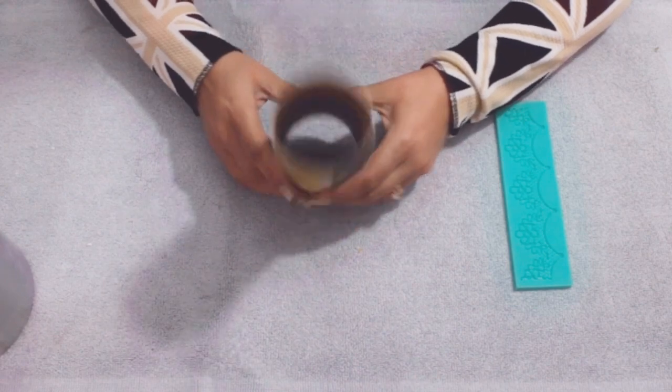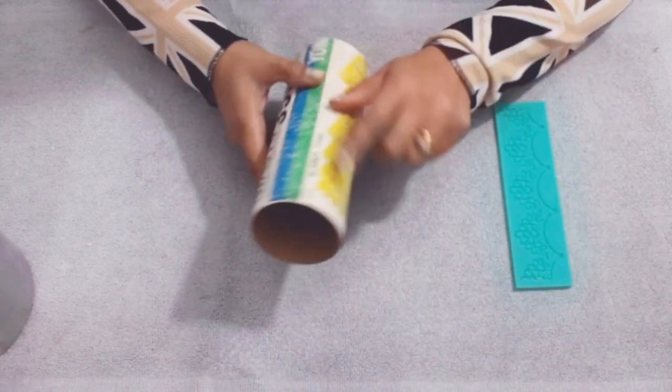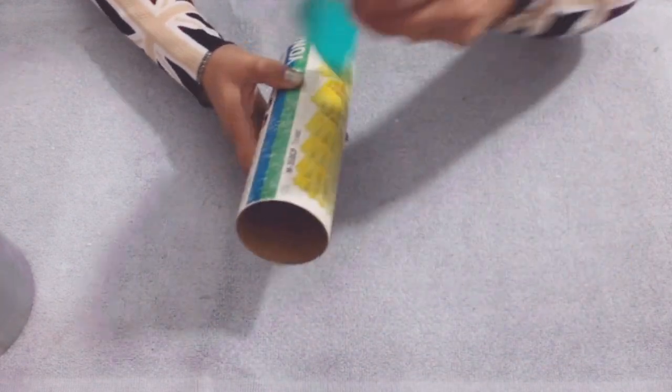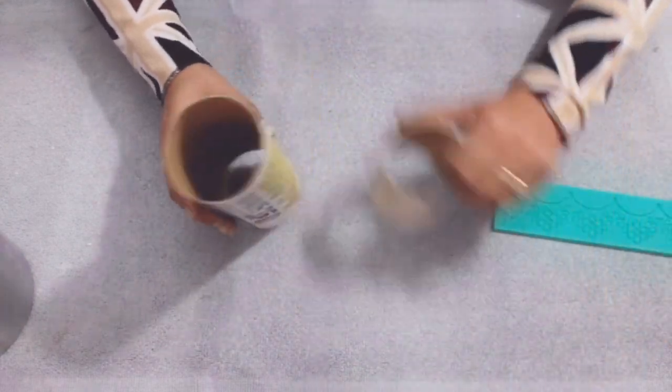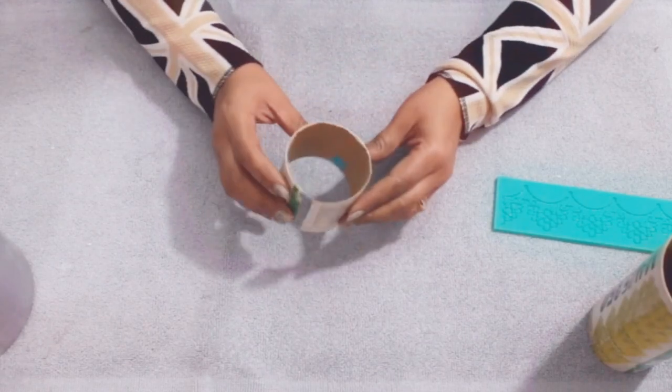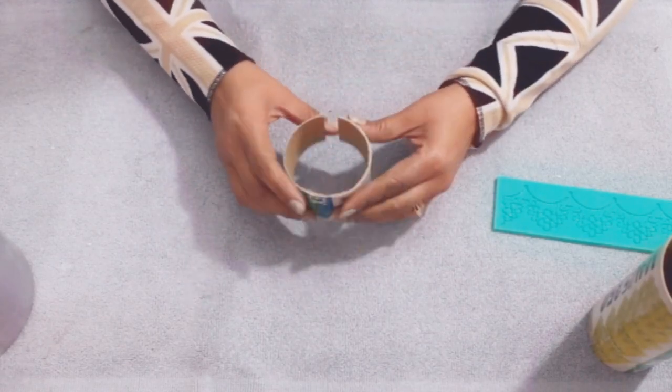Other than this, I'm using an old empty shuttlecock box. You can also use any Pringle box or anything like that. Just measure the length or height of the fondant lace and then cut a piece like this.